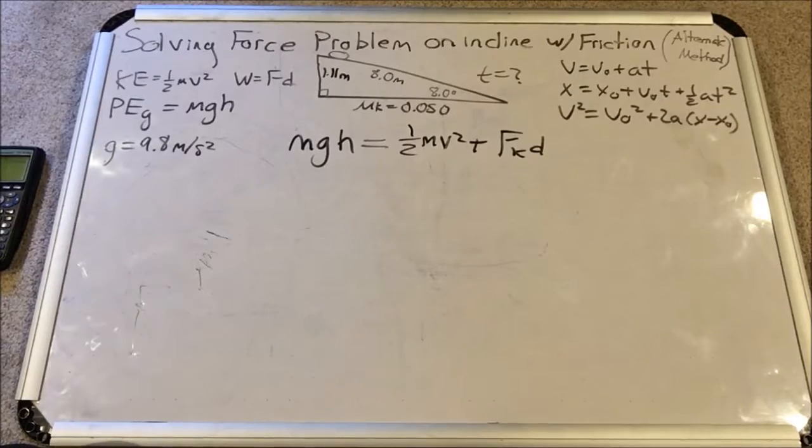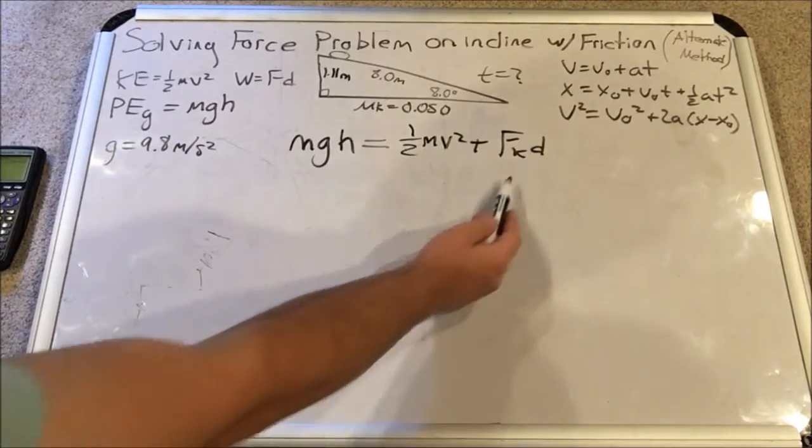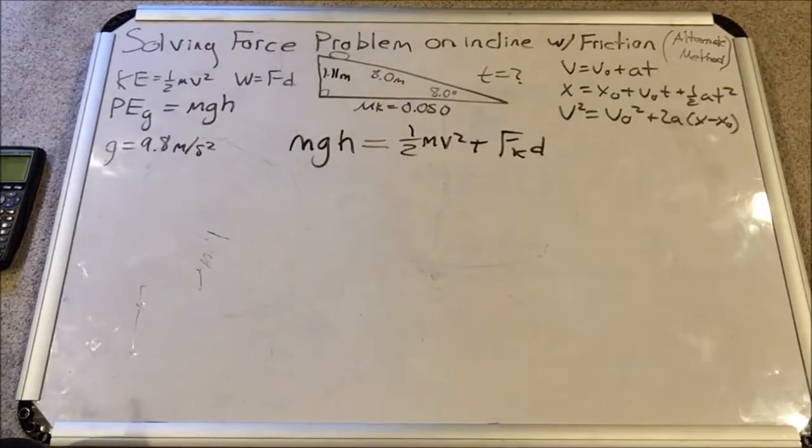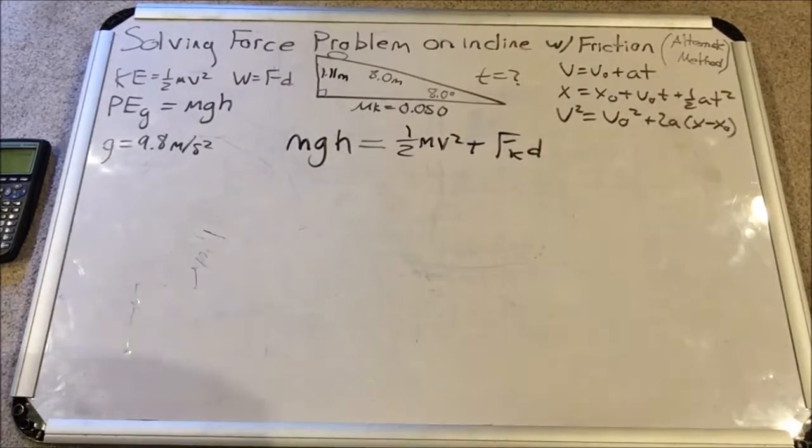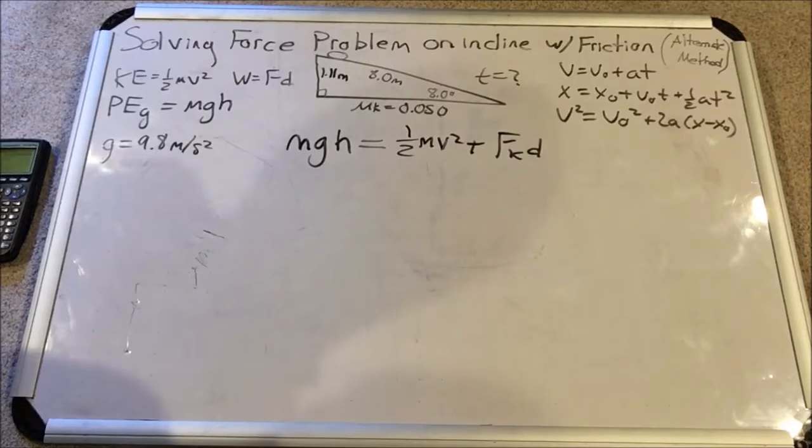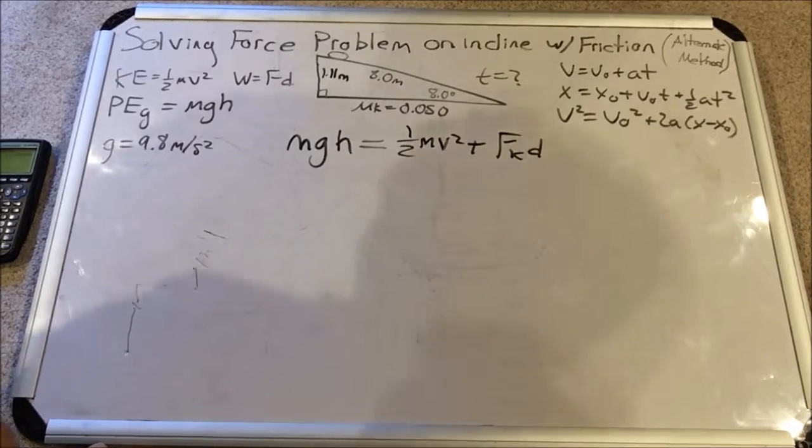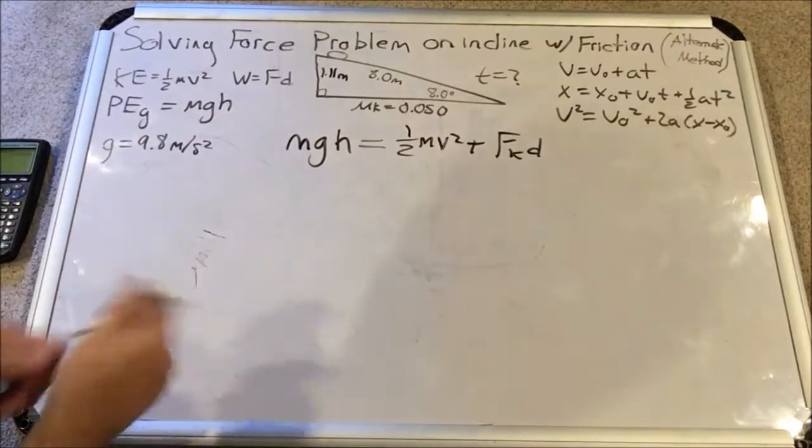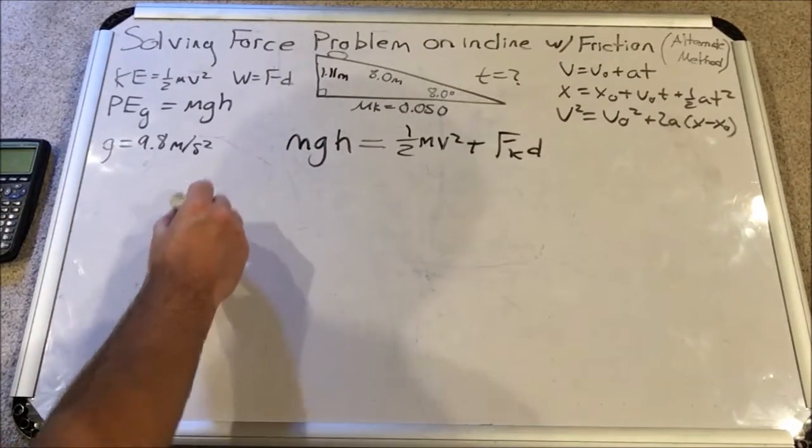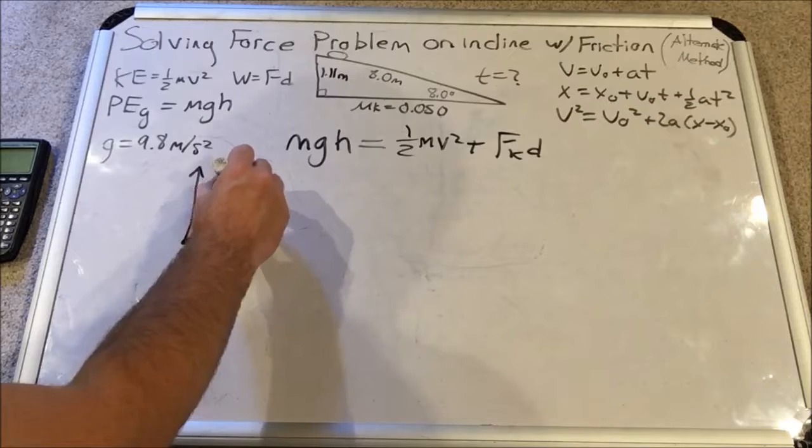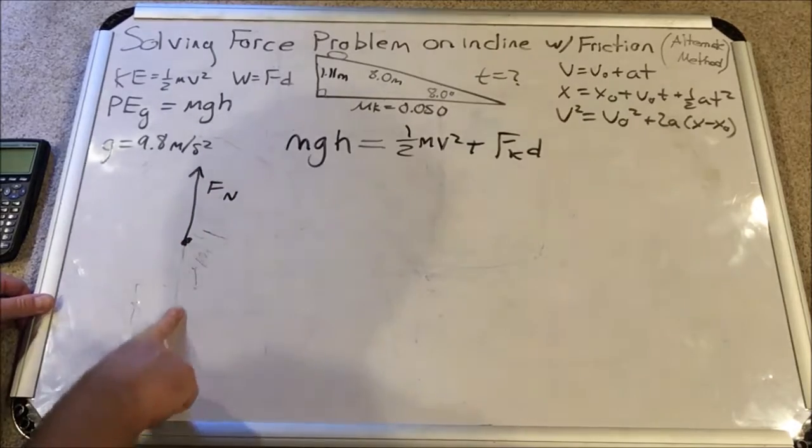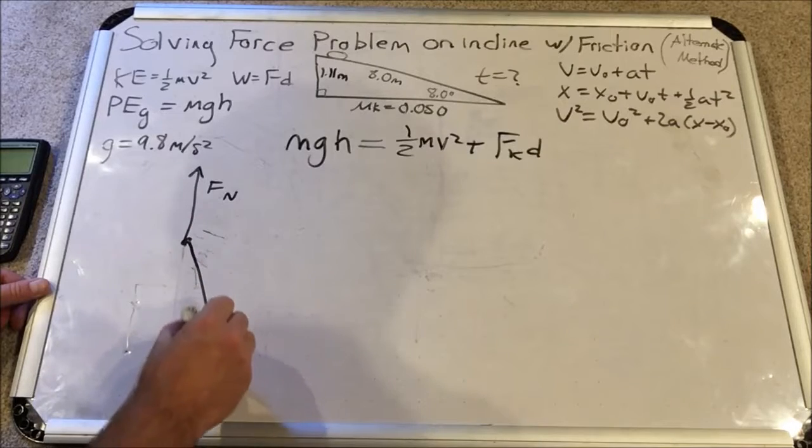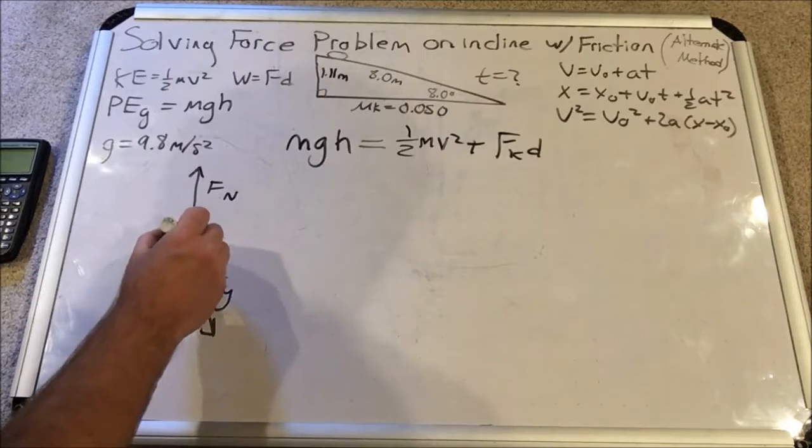So we have to find the velocity, and the only thing really stopping me is that I don't know the friction force. I need an expression for the friction force, and I'm going to use the free body diagram for the soap to get it. So let's set that up quickly after rotating the axis so the normal force points straight up. Here's the normal force. Here's gravity at an angle, 8 degrees.